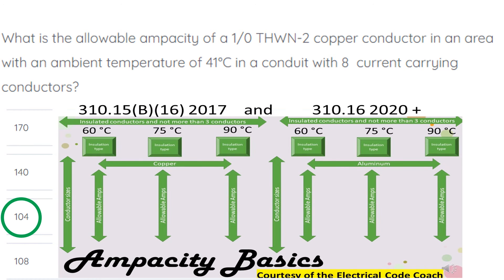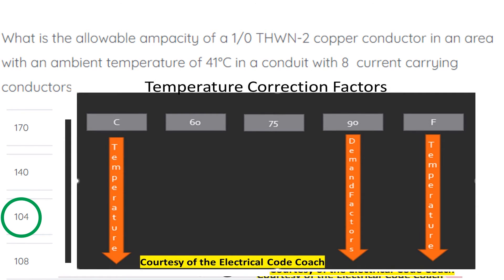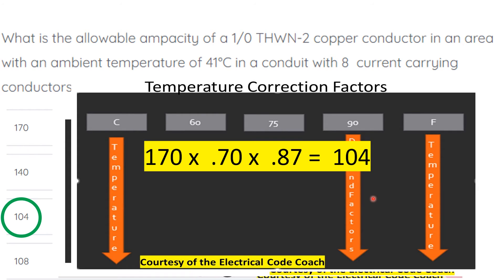First, we head to our primary ampacity table to see if our insulation type is listed in the 90 degrees C column. If it is, we choose our starting ampacity from the 90 degrees C column. Then we head to our bundling adjustment factors table, start on the left-hand side to find our number of conductors, and come over to find our adjustment factor. Next, we go to our temperature correction factor table. Since the temperature is in Celsius, we start on the left-hand side, find our temperature, and cross over to the 90 degrees C column to get the correction factor. Our original ampacity was 170 amps. We multiplied by 0.70 and then by 0.87, ending up with approximately 103.53 amps, which we round up to 104 amps.